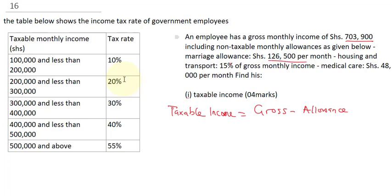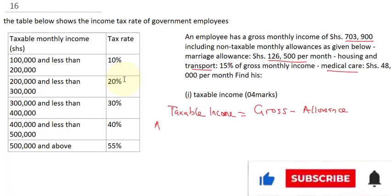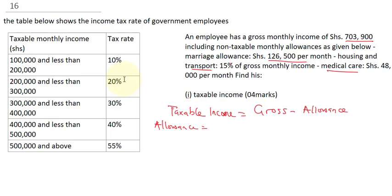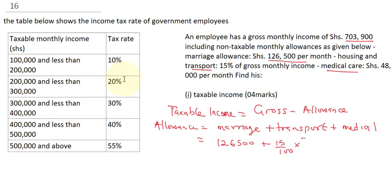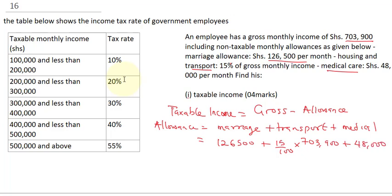Allowances include marriage allowance, transport, and medical care. To calculate total allowance, we sum: marriage allowance plus transport plus medical care. Marriage is 126,500. Transport is 15% of gross, which is 15/100 multiplied by 703,900, plus medical care of 48,000.